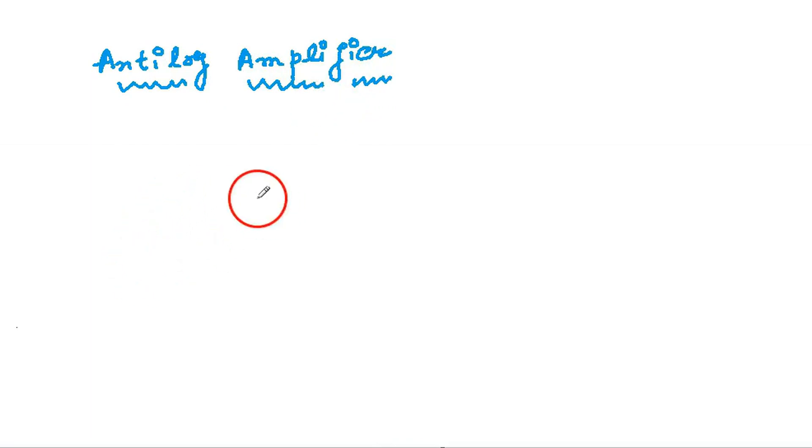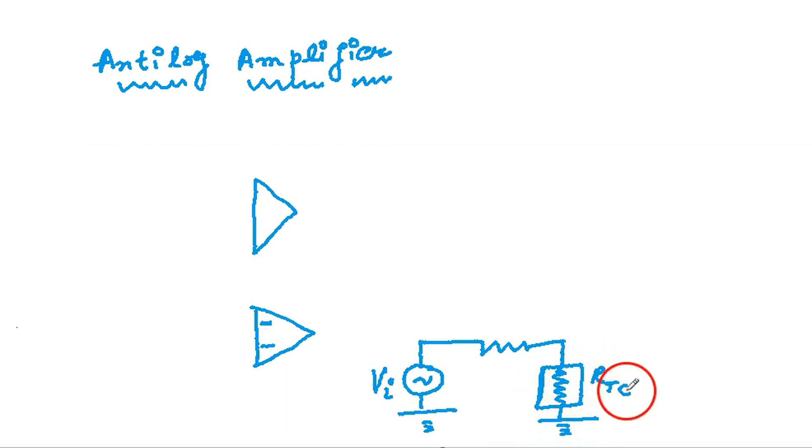We are using Op-Amplifiers for making Anti-Log. This is the second Op. This is the input voltage which is to be converted into the Anti-Log, given to two resistors.